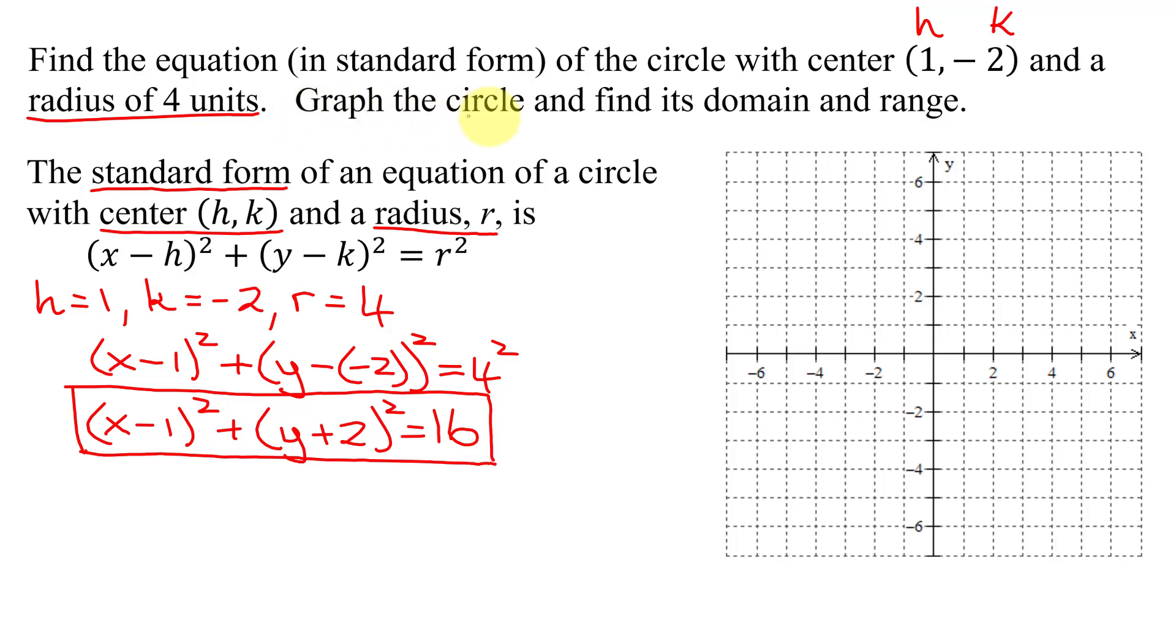Now I need to graph the circle. So we graph the center first. x is 1, y is negative 2. There's my center. There are an infinite number of points on a circle, but there are 4 easy points to graph. And you're going to go up, down, left, and right the radius.